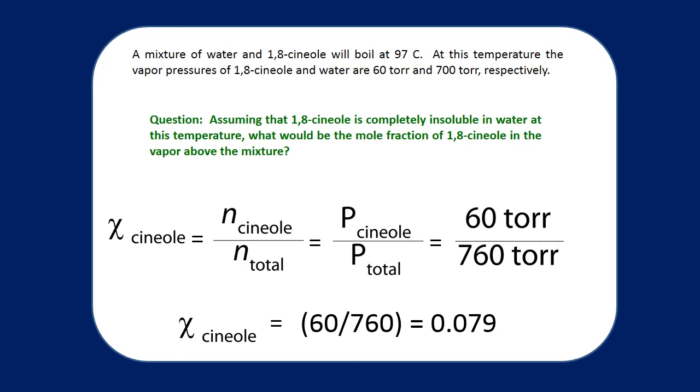And we already have the numbers which we expect based upon our problem, 60 torr for the oil and a total of 760 torr for the entire system. This leads to a calculation of a mole fraction of about 0.079 for our organic oil. So only about 8 mole percent of the vapor moving out of a boiling mixture of oil and water would be expected to be oil. This doesn't sound so great, but let's keep going and see what happens.